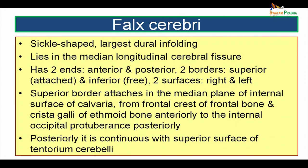The falx cerebri is the largest sickle-shaped dural infolding. It lies in the median longitudinal cerebral fissure. It has two ends — anterior and posterior — two borders — a superior attached border and an inferior free border — and two surfaces, right and left. The superior border attaches in the median plane of the internal surface of the calvaria, extending from the frontal crest of the frontal bone and the crista galli of the ethmoid bone anteriorly to the internal occipital protuberance posteriorly. Posteriorly, it is also continuous with the superior surface of the tentorium cerebelli by its broad posterior end.